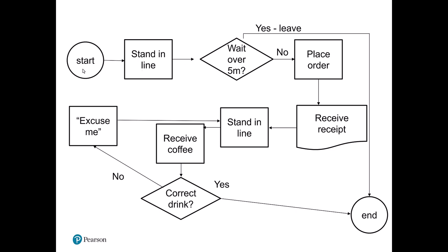We have our process. We start by standing in line. Now, this is a real scenario. We say, all right, if we have to wait too long, then we're going to have a different thing happen. If our wait is over five minutes, we're just going to abandon the coffee and go to class uncaffeinated and unhappy. If, however, it's not, we're going to continue and actually place our order here.